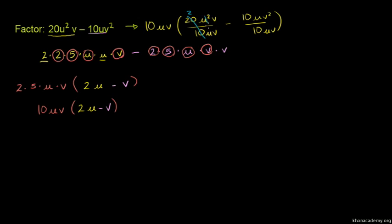So we have 2uv, and 2u minus v. The final answer is confirmed: 10uv(2u - v).